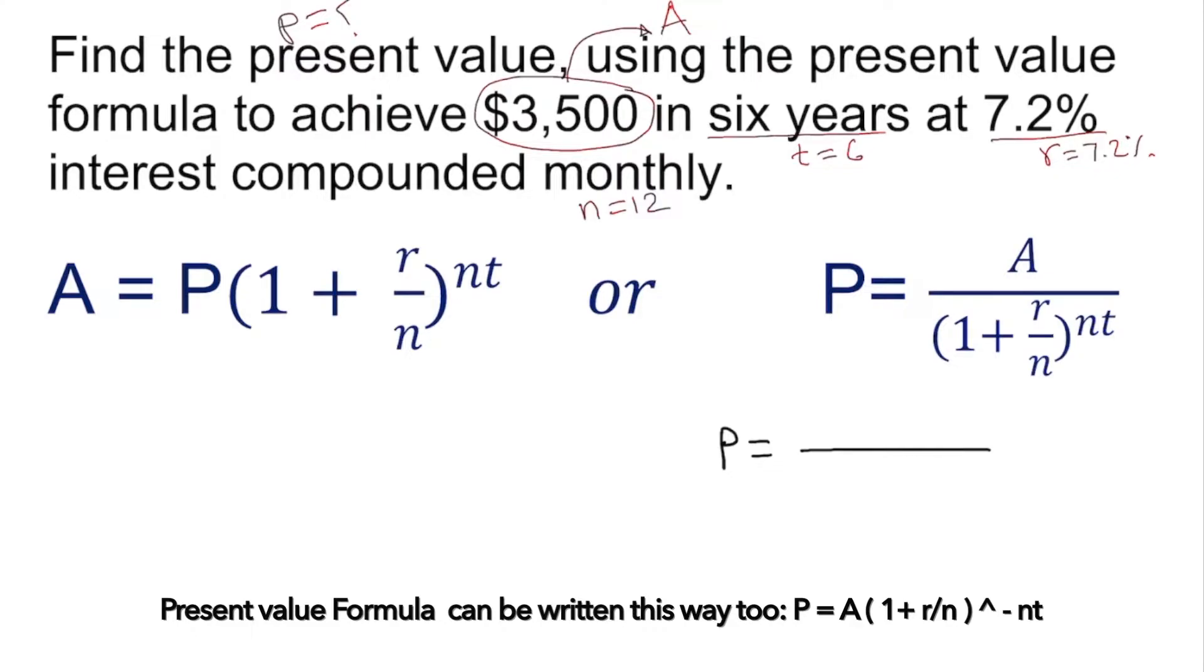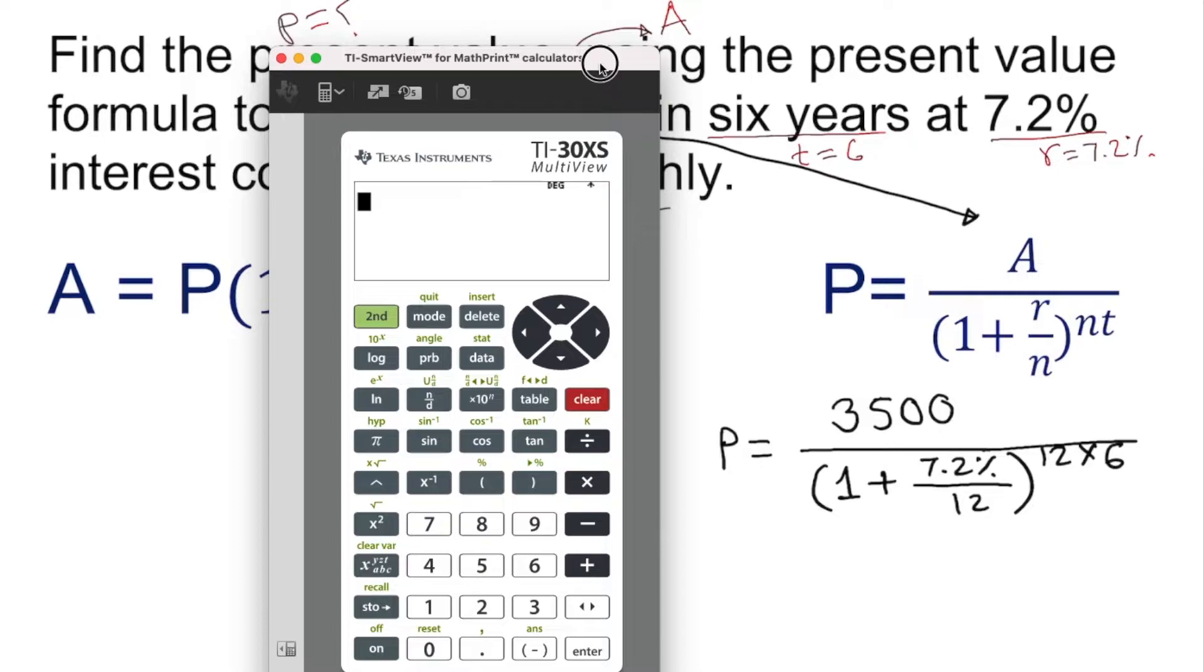P equals amount divided by (1 plus r/n)^(nt). The amount is 3500, which is the total amount after six years. On the bottom we have 1 plus r - the rate is 7.2% or converted to decimal - divided by n which is 12, to the power 12 times t which is 6. We can plug this into the calculator.